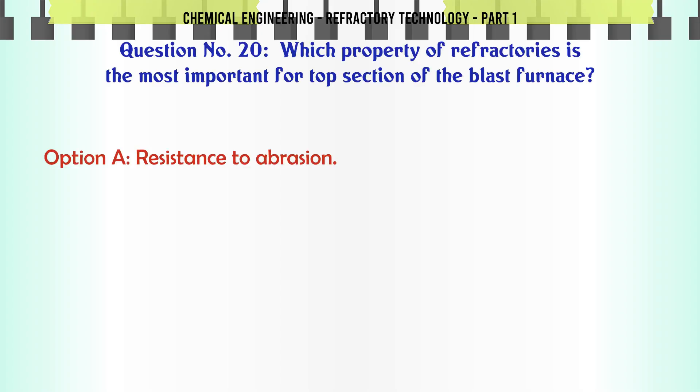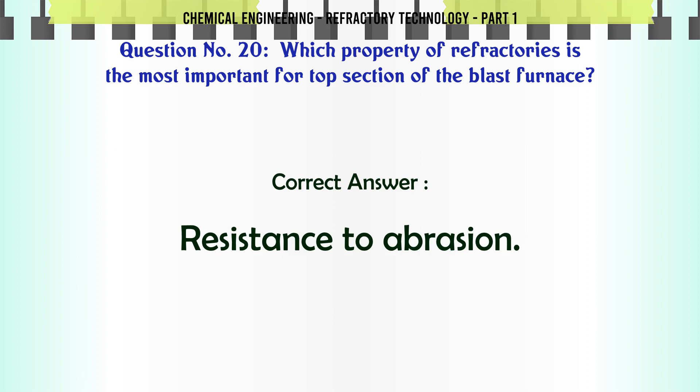Which property of refractories is the most important for the top section of the blast furnace? A. Resistance to abrasion, B. Resistance to slag penetration, C. Stability of volume at high temperature, D. Resistance to corrosion by slag. The correct answer is Resistance to abrasion.